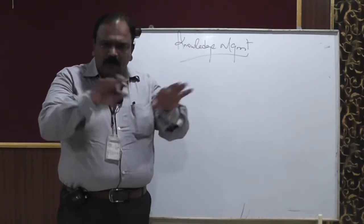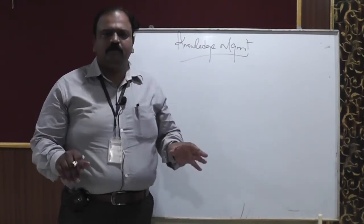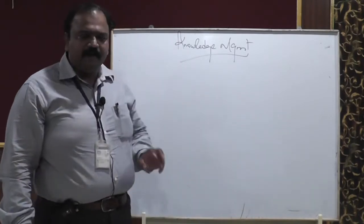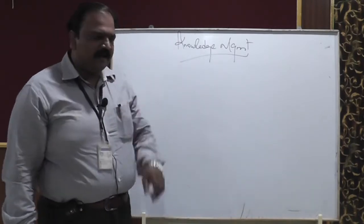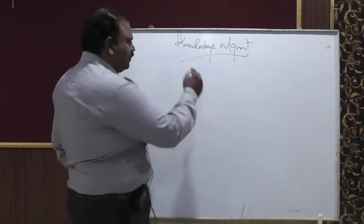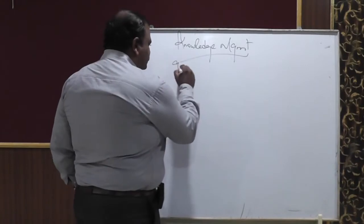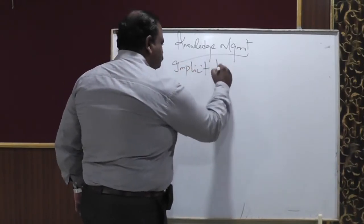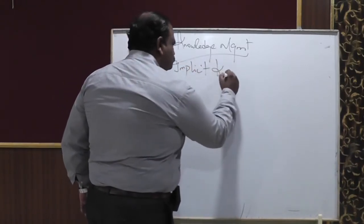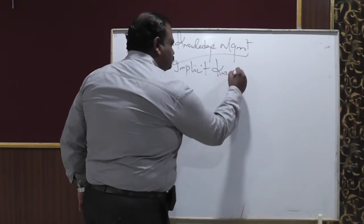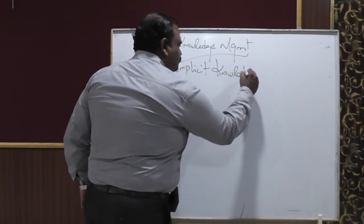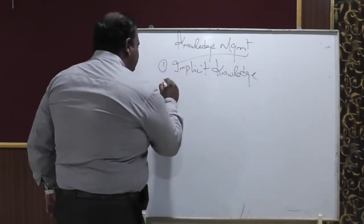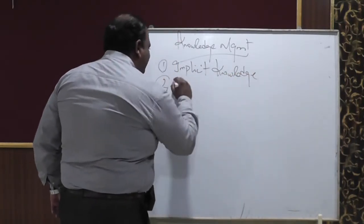For example, a professor like me is going to share knowledge with you, and you are going to share your knowledge with your friends too. So this knowledge can be divided into two different categories: the first one is called implicit knowledge, and the second one is tactic knowledge.